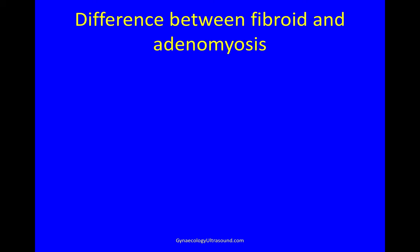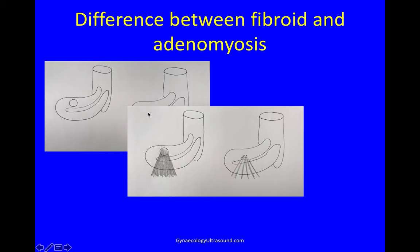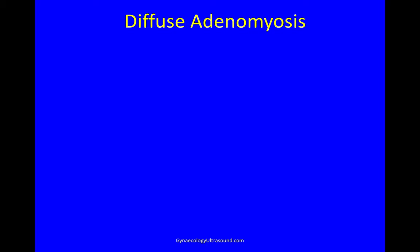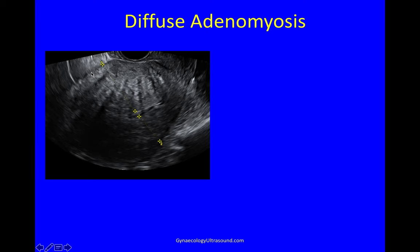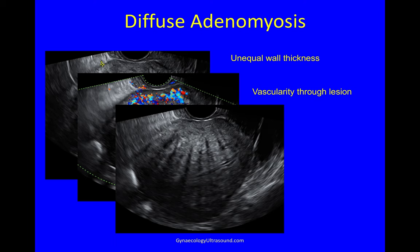The key difference between a fibroid and adenomyosis: a fibroid causes very dense posterior shadowing whereas with an adenomyoma you get more stripy shadowing — like light coming through a set of blinds, lighter, darker, lighter, darker. With colour Doppler you get circumferential flow typically in a fibroid, whereas the vessels cross the lesion in adenomyosis. In this example of diffuse adenomyosis, the anterior wall is much thicker than the posterior wall, the vessels traverse rather than encircle the lesion — no peripheral capsule — and there's that stripy shadowing typical of adenomyosis.